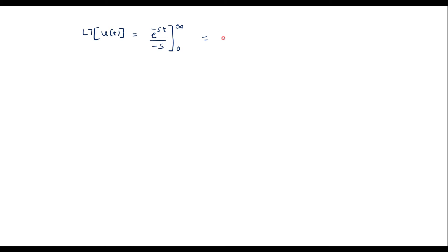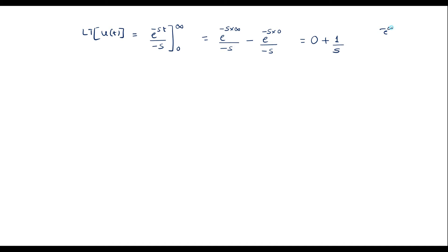Applying the limit: e to the power minus s times infinity divided by minus s, minus e to the power minus s times 0 divided by minus s. We know that e to the power minus infinity is 0, so the first term is 0. The minus minus becomes plus, and e to the power minus 0 is 1, giving 1 divided by s. Therefore the Laplace transform of unit step signal u of t is equal to 1 by s.